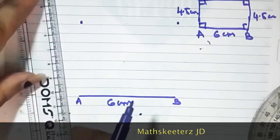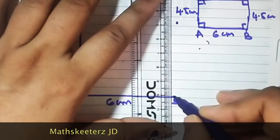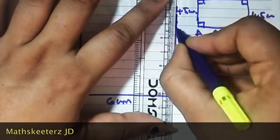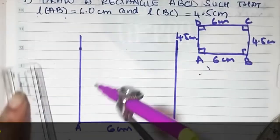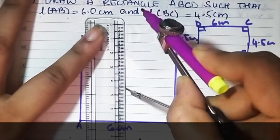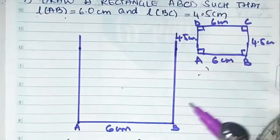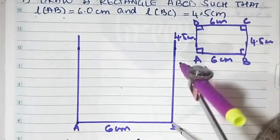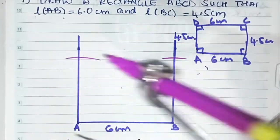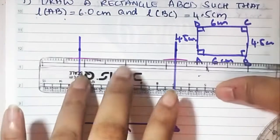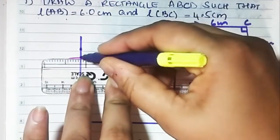Mark 90 degrees from B and join. These sides are 4.5 and 4.5. What you have to do is measure 4.5 — this is 4.5, 4.5 is measured. From B, draw an arc of 4.5. From A, draw an arc of 4.5. Now those arcs which you have done, you just have to join those arcs, and your construction is done.